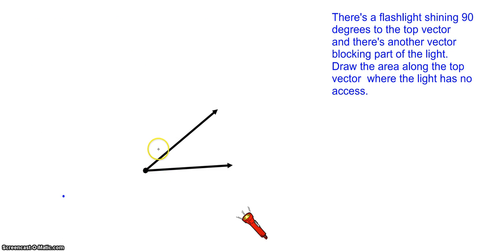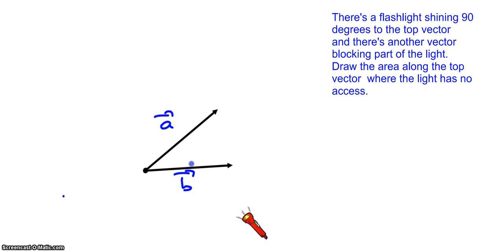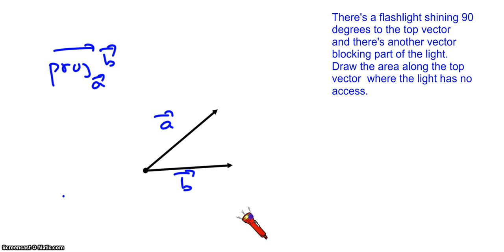In this particular example we have a different type — the vectors are tilted and the situation has changed. Let's call this vector A and this one B. I want to draw a projection of B on A. Basically, you're going to be drawing a vector parallel or collinear to A. The light is coming from here and shining 90 degrees to the A vector — imagine 90 degrees on both sides.